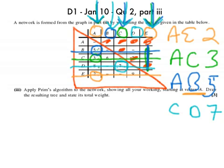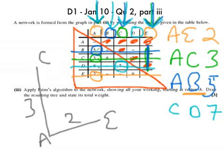And the final thing the question asks me to do is to draw the minimum spanning tree, which is what I should do now. So I can just say A to E is 2, and A to C is 3, A to B is 5, and C to D, I'll just draw that a bit like that, is 7. And so that's my minimum spanning tree.